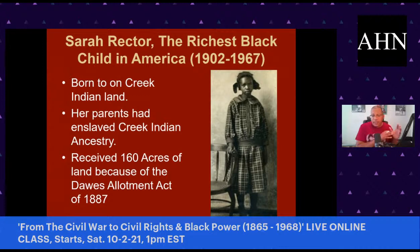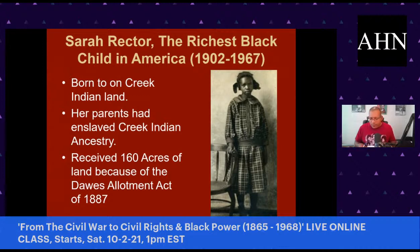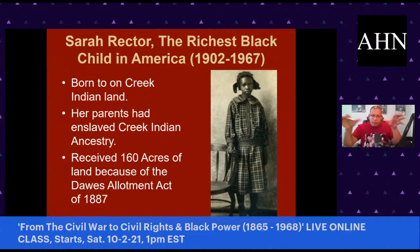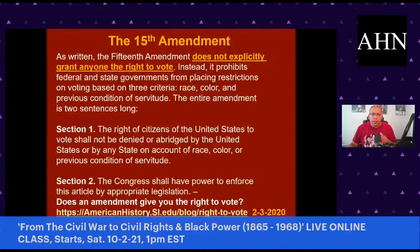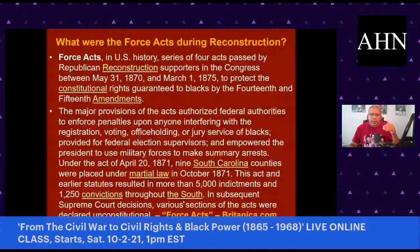Many early African American landowners in North Tulsa got land through these treaties because the Choctaw, Chickasaw, Creek, Cherokee, and Seminole Indians all owned African slaves. After the Civil War ended, those nations entered into treaties with the U.S. government and were forced to free those African Americans, give them land, and grant them membership in their nations. Oil was discovered on Sarah Rector's land and she became a millionaire. Tulsa and Oklahoma had over 50 Black townships.